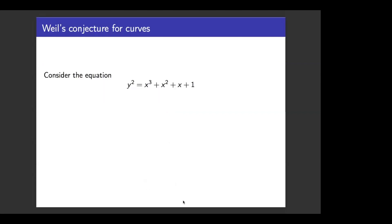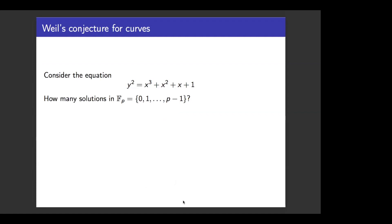I'm also a number theorist, and one of the things I like to do is think about solving equations over somewhat exotic number systems. I like to warm up in particular by thinking about counting how many solutions this equation has over a field of p elements. If you're doing this by brute force, you just plug in some value for x, and you look at the right-hand side and ask yourself: is it a square? About half the numbers in F_p are squares, and when they're squares, they have two square roots, more or less.